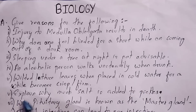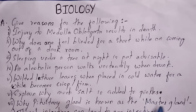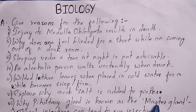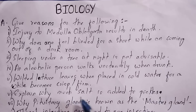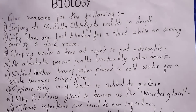Question 7: Why is the pituitary gland known as the master gland? The pituitary gland is called the master gland because it controls the functioning of all other endocrine glands.